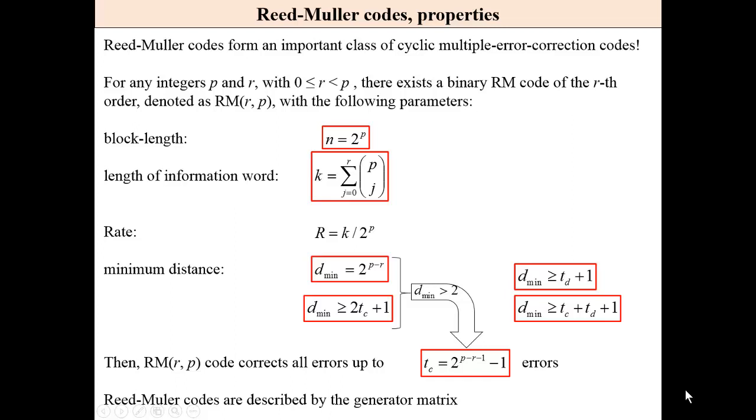One more error control code, actually a family of codes: Reed-Muller codes. These codes form an important class of cyclic and non-cyclic multiple error correction codes. For any integers P and R, where R is less than P and greater than or equal to zero, there exists a binary RM code.